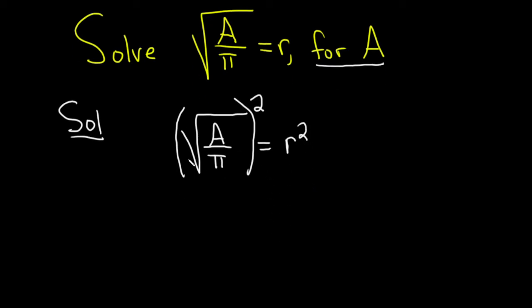When you square the square root, the square root goes away, and so we get A over π, and that's equal to r squared.